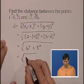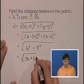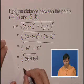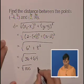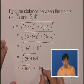So we have the square root of 36 plus 64, which is the square root of 100, which we happen to know is 10.